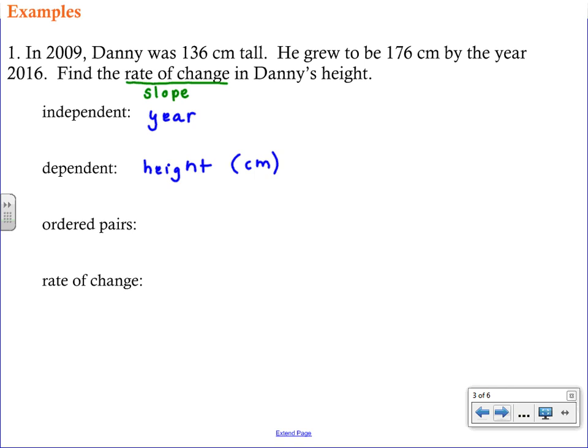And that height is measured in centimeters because Danny's height is going to depend on what year it is. So the next thing that we have to do is we have to come up with ordered pairs. So I am told that in 2009 Danny was 136 centimeters. And then I knew that in 2016 he was 176 centimeters. So I've used two different colors because those are the values that belong together. And then I just have to make sure that they're in the correct order. And the independent variable is X. The dependent variable is Y. And so we've determined that our X coordinate is going to be the year. So my first ordered pair is going to come from what I circled in red. The year is 2009 and the height is 136.